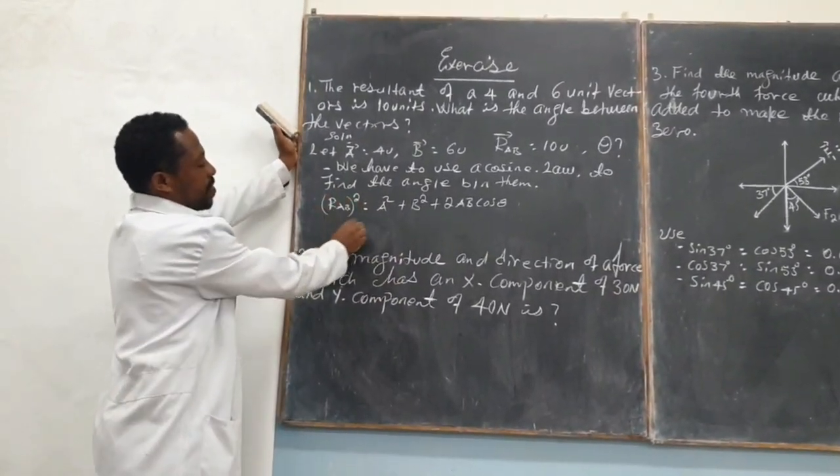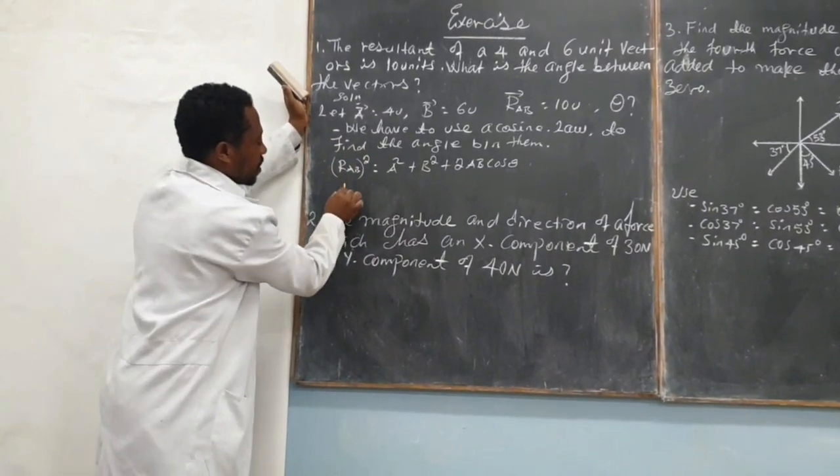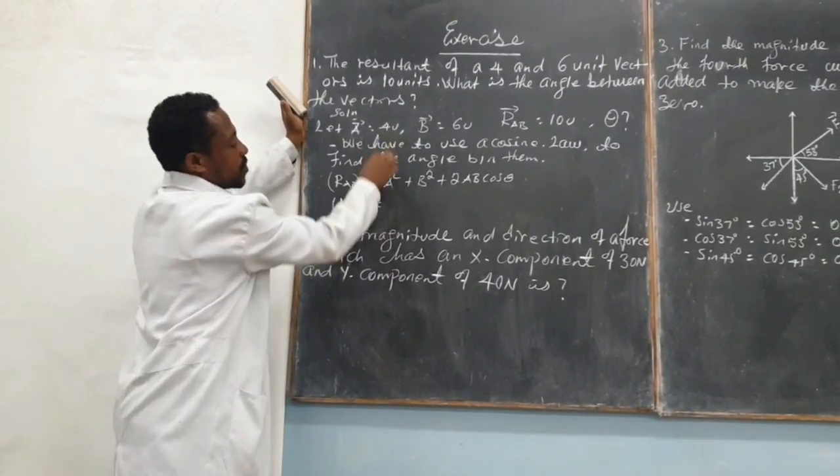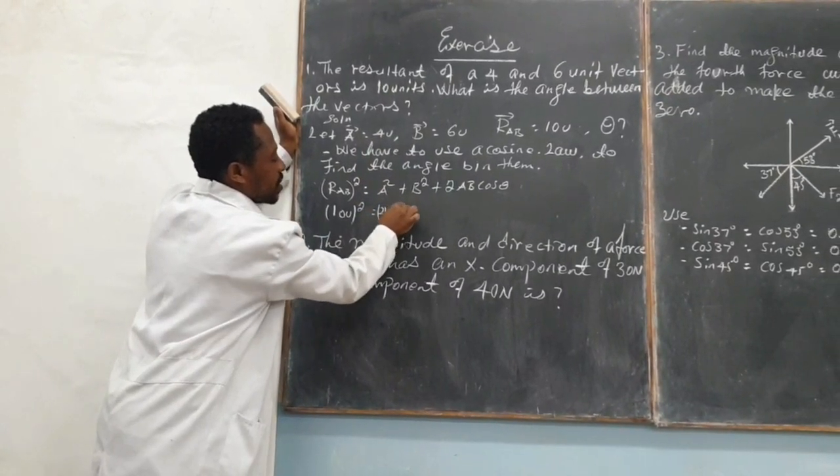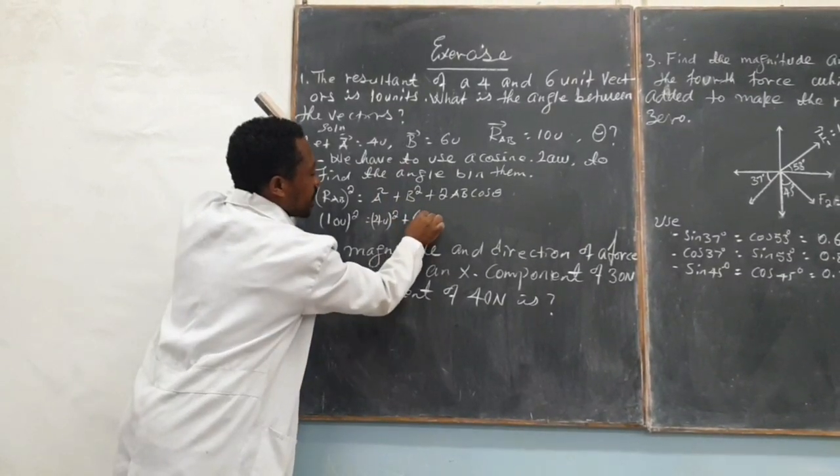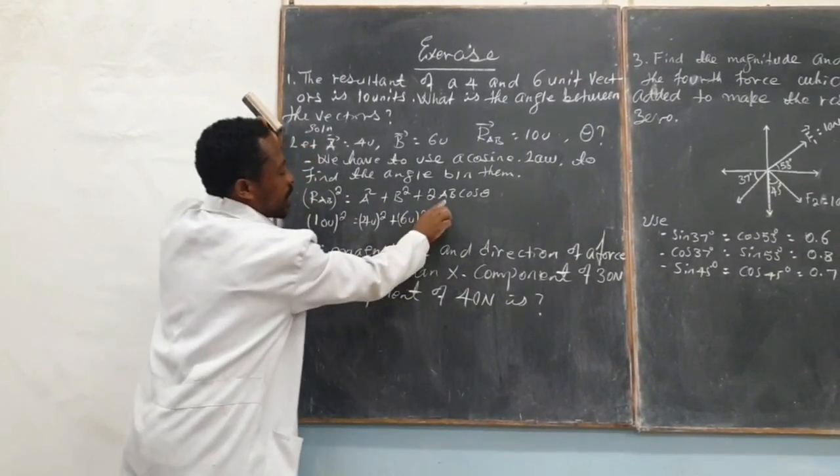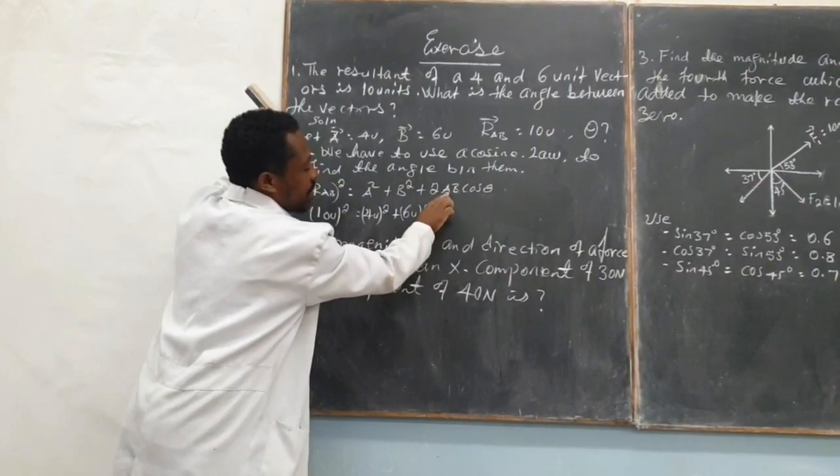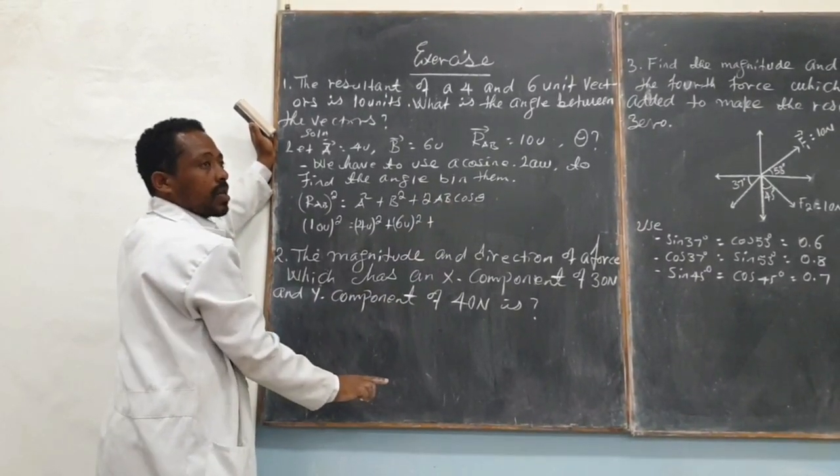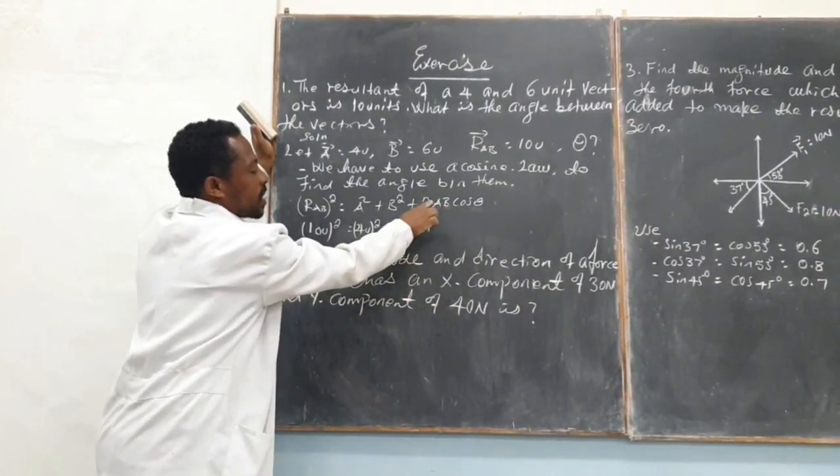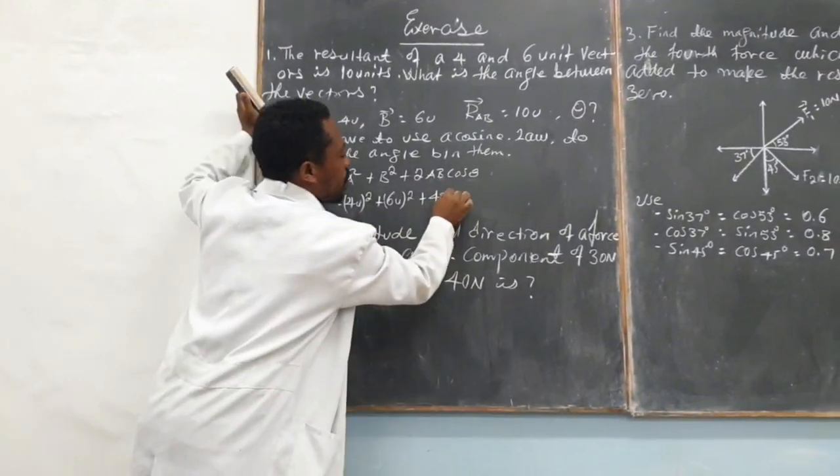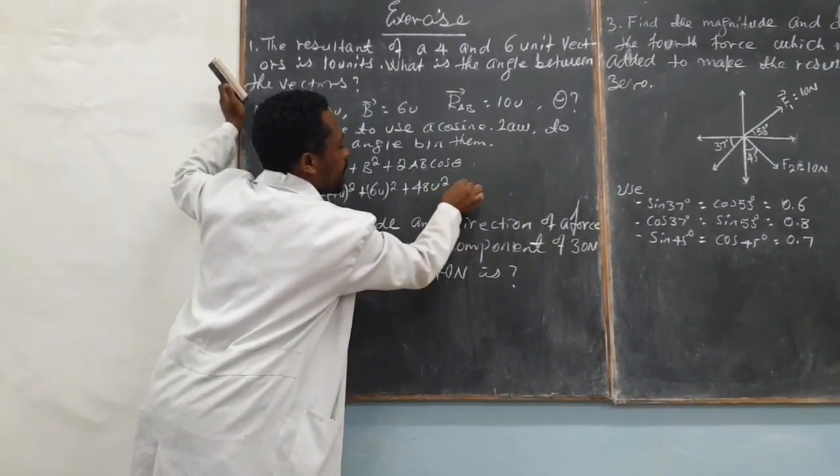R_AB is 10 units, so 10 squared. A is 4 units squared, and B is 6 units squared. Plus AB, that is 4 times 6, which is 24. 24 times 2 becomes 48 squared units cosine of theta.